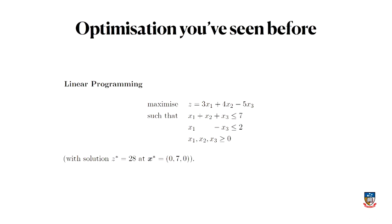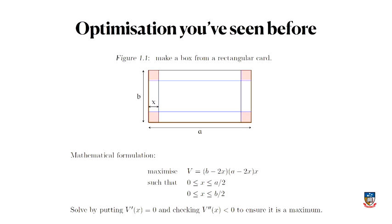In Maths 1A you would have seen problems like this and learned how to solve them. It doesn't take too long to figure out that the solution — the maximum of that function — is z equals 28, when x2 equals 7 and the other two equal zero. So that's a linear programming problem.